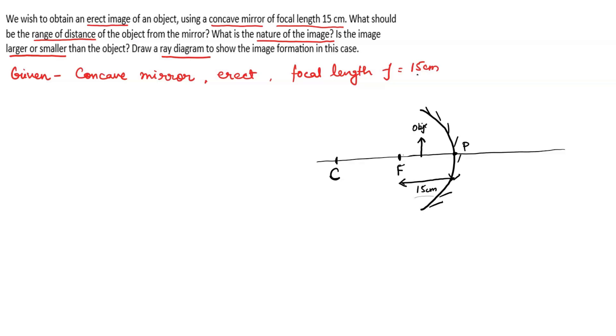If a ray passes through the center of curvature, then it is reflected back along the same path. So let the second ray go toward the pole. The angle of incidence must be equal to the angle of reflection.